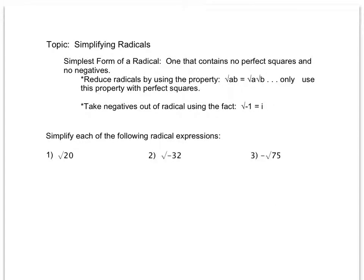Now that we know how to simplify perfect squares — for example, the square root of 4, the square root of 9, the square root of 16, the square root of 25, and so on — we can also simplify the negatives: the square root of negative 4, the square root of negative 16, the square root of negative 9, the square root of negative 25.